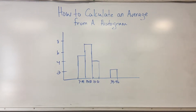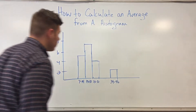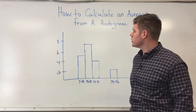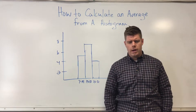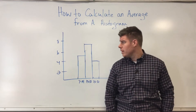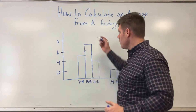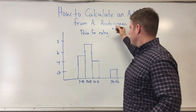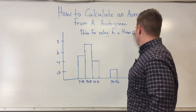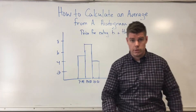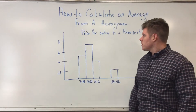This is a quick video on how to calculate the average from a histogram. The average we're going to focus on is the mean — not the median, just the mean. Specifically, I want to know the price I'm going to pay if I go to an amusement park. This is the price for entry to a theme park. The data might be from a long time ago since most parks don't charge just seven to fourteen dollars anymore, but it works as an example.